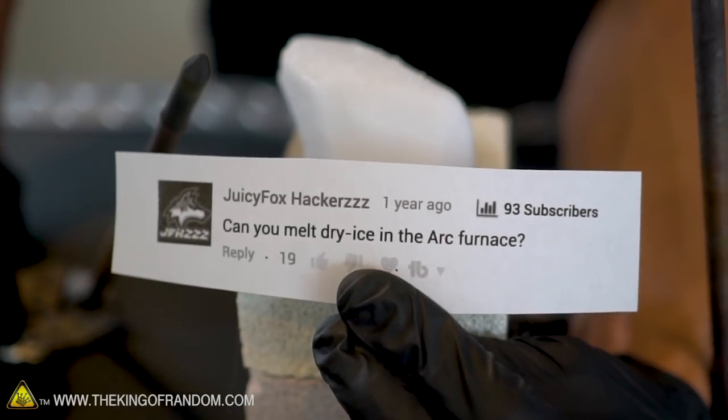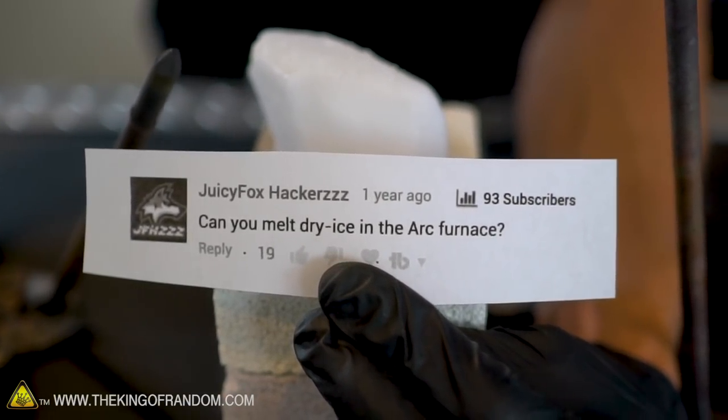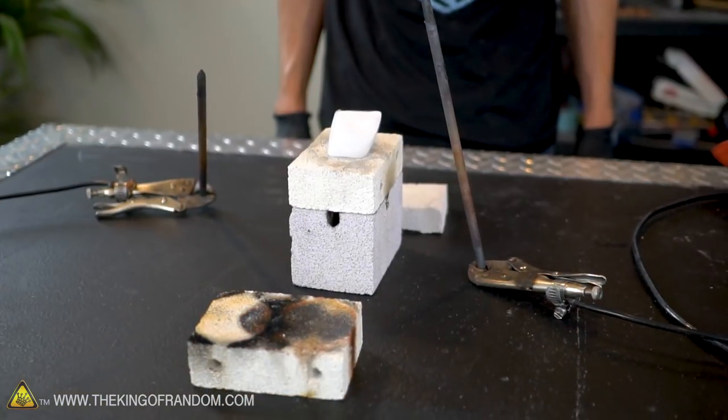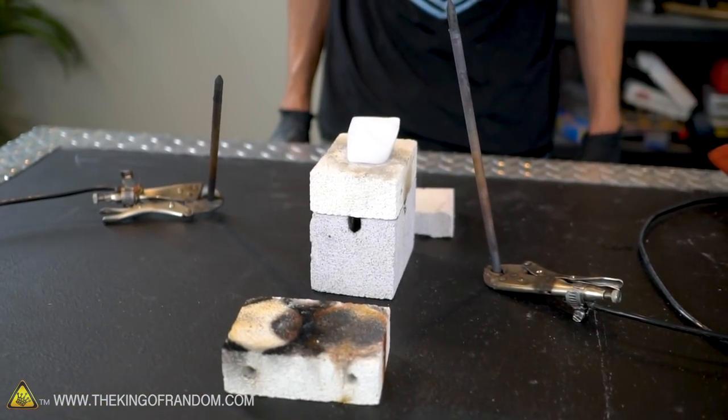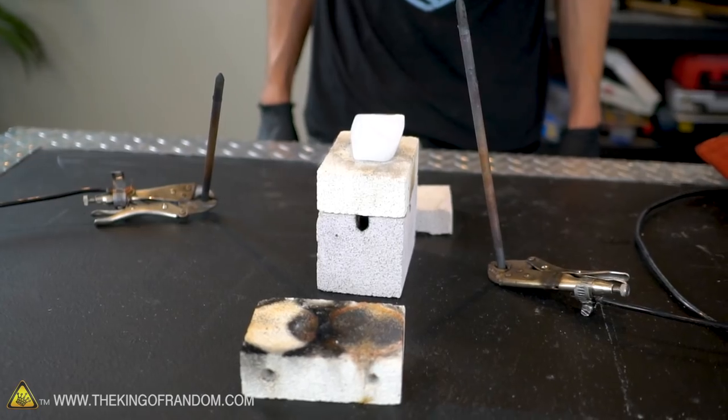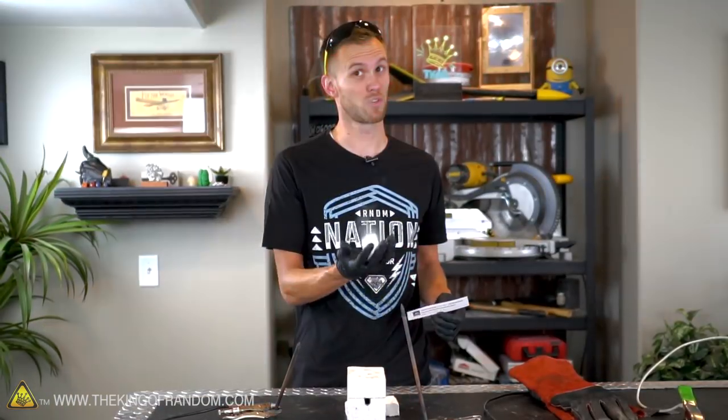YouTuber JuicyFoxHackers wanted to know what would happen if we put dry ice in our mini arc furnace. Well, JFH, we're not sure what's going to happen because dry ice is exceptionally cold, but our mini arc furnace is exceptionally hot. It gets up to several thousand degrees in Fahrenheit or Celsius.